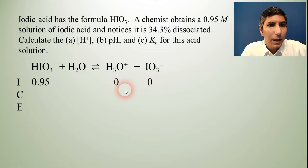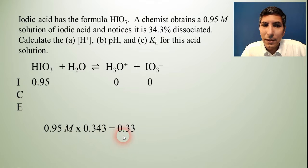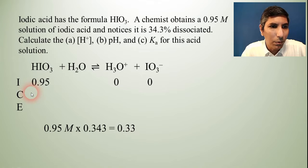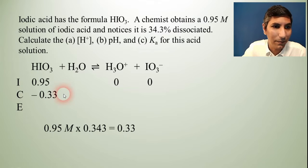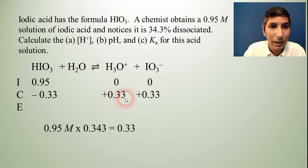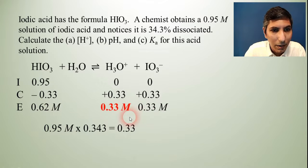So now we are ready to set up our ice box and we know that the initial concentration of iodic acid is 0.95. We know that the products are going to be zero. Now normally this is the point where we'd say minus x and plus x and plus x. But notice in this problem we don't have to say x because we know what percent of the acid is dissociated. It's 34.3%. So that means that 34.3% of this 0.95 is going to be subtracted. We just have to do the simple arithmetic to figure out how much that is. So I take the 0.95 molar and take 34.3% of that and I find that that's about 0.33. So in the change row instead of writing minus x I'm going to write minus 0.33 because it's not unknown. Now these others over here have to be a plus 0.33.